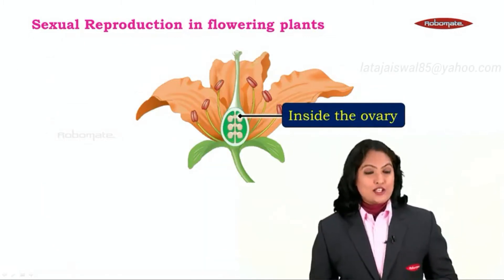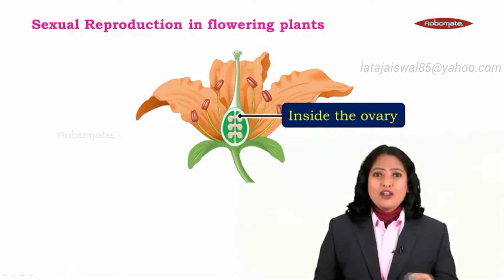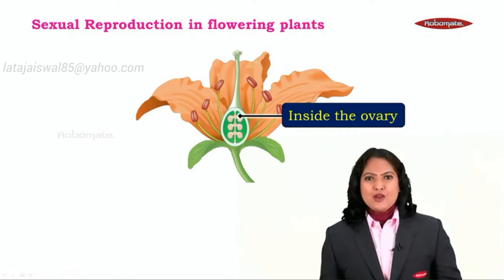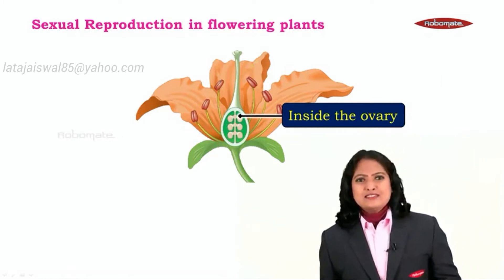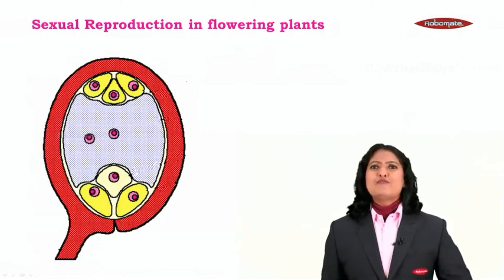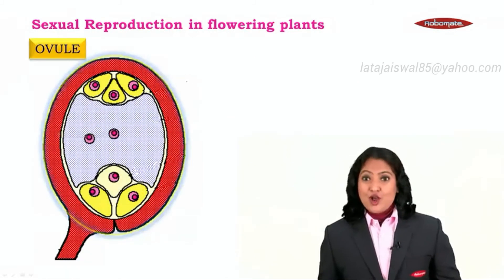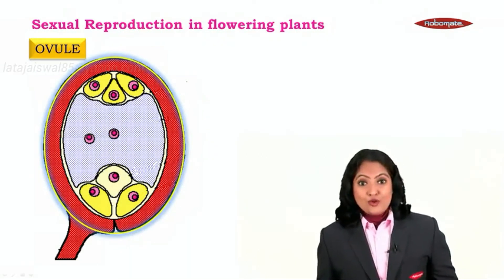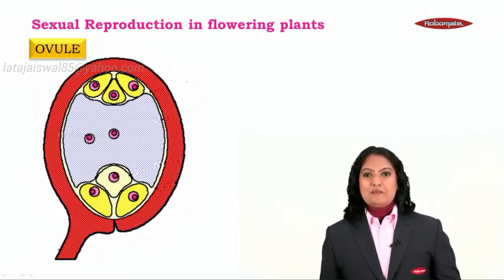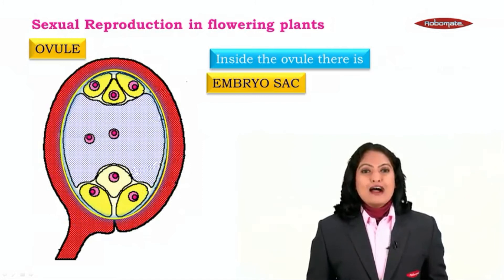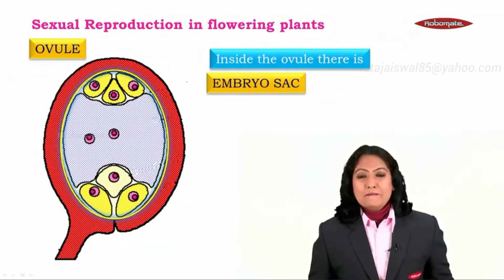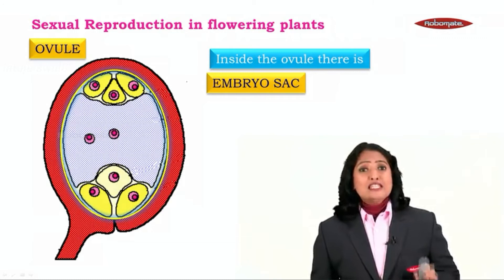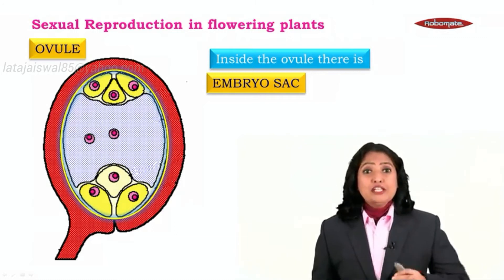Moving on to the carpel — the right bottom swollen portion of a carpel is called the ovary. What is inside the ovary? As you can see, demarcated by an arrow, inside the ovary there is a very special structure called the ovule.